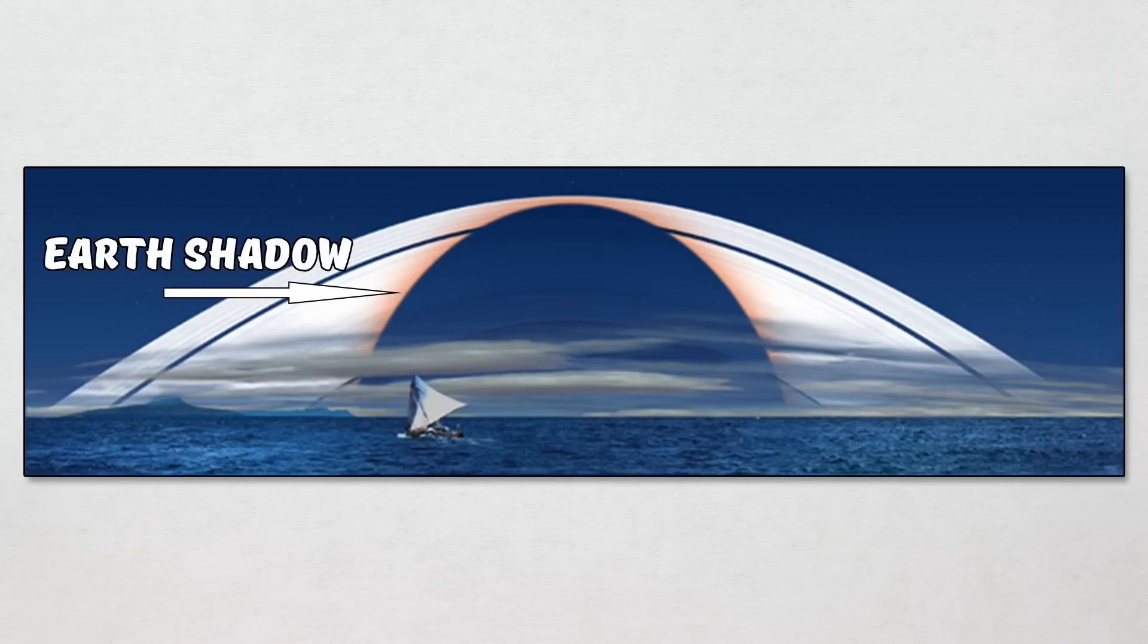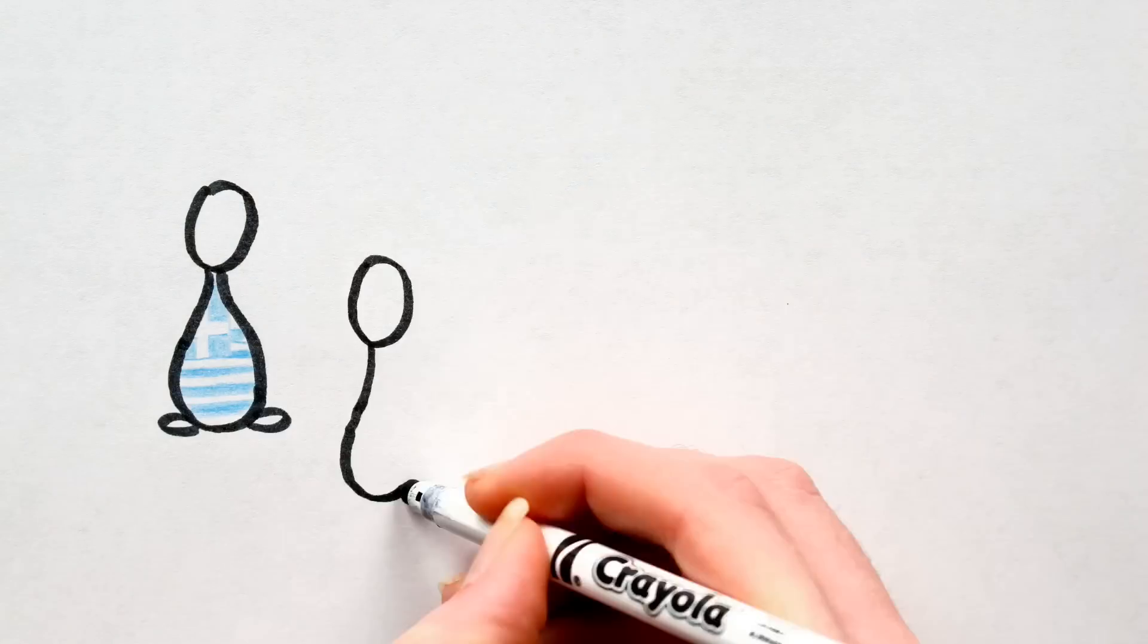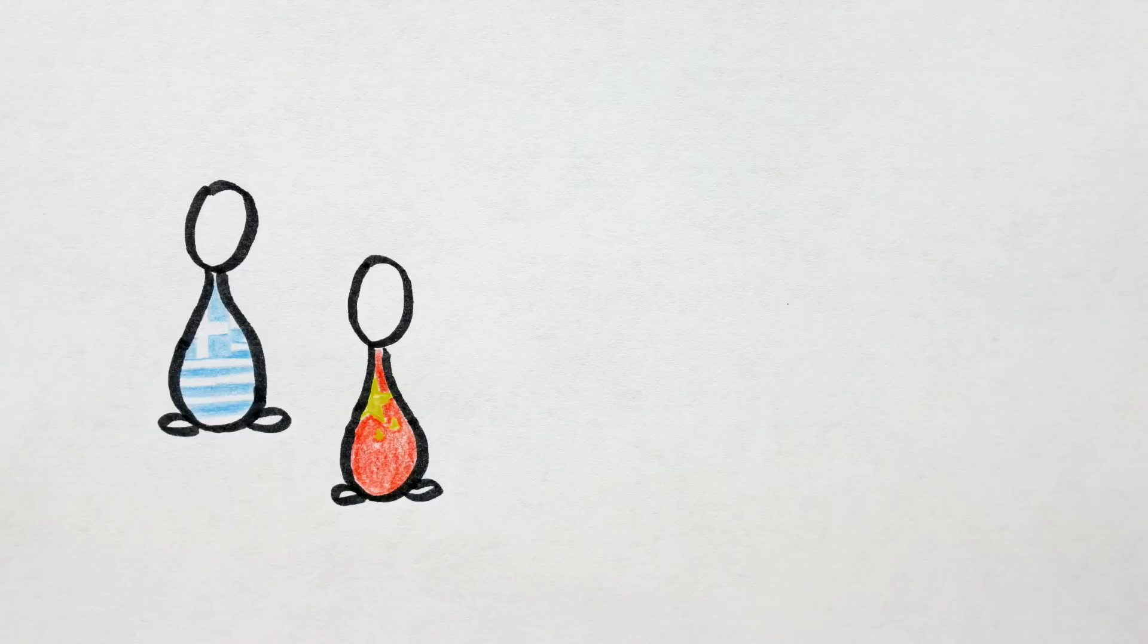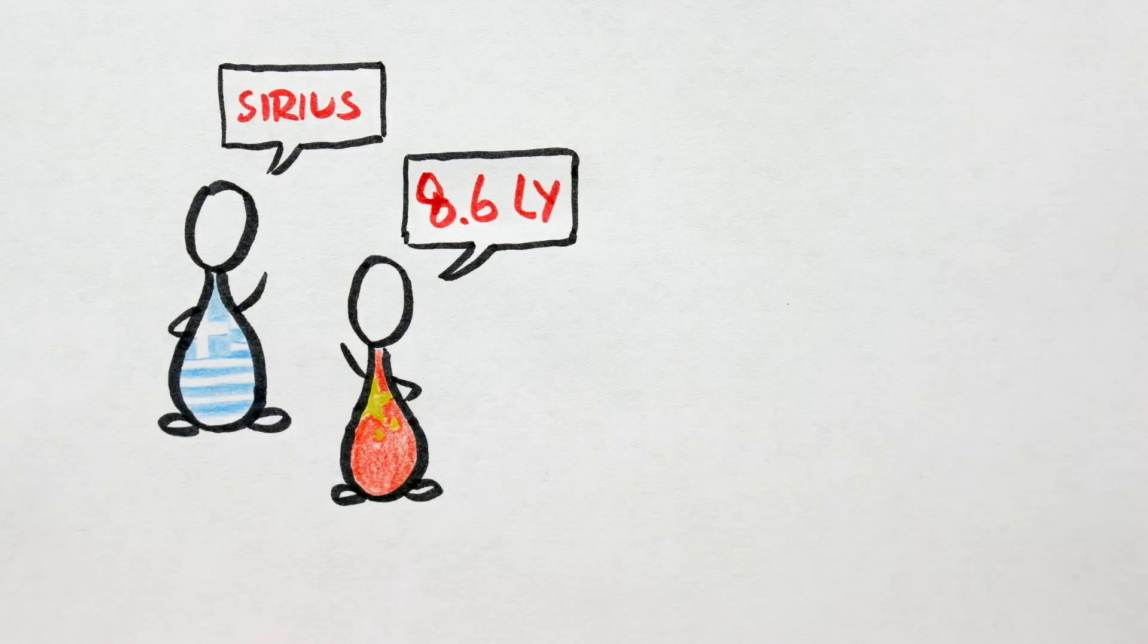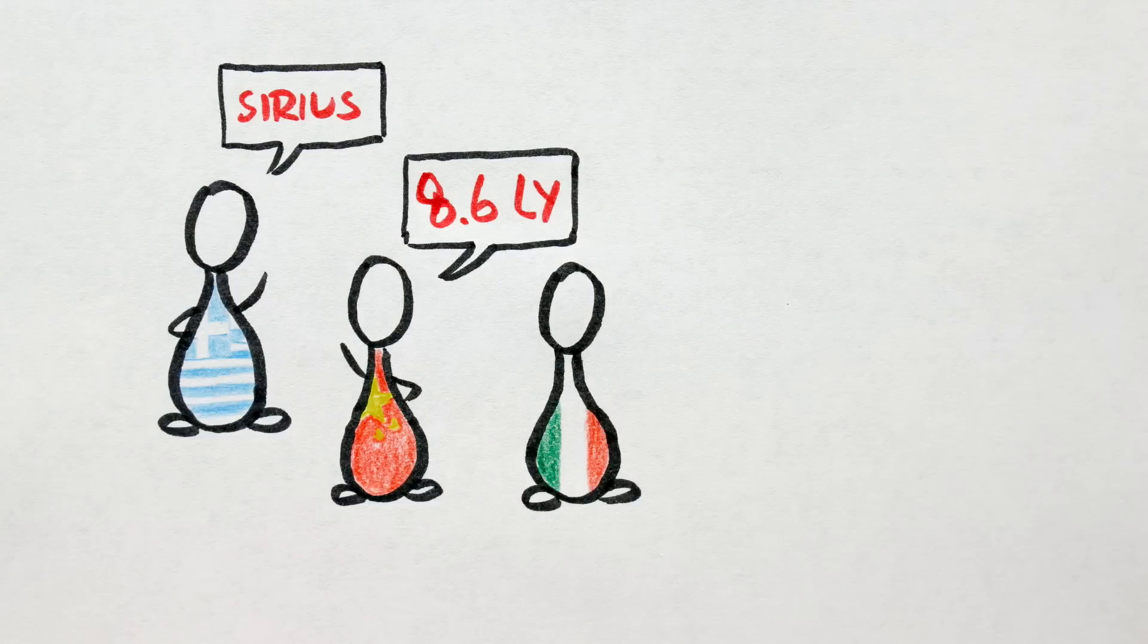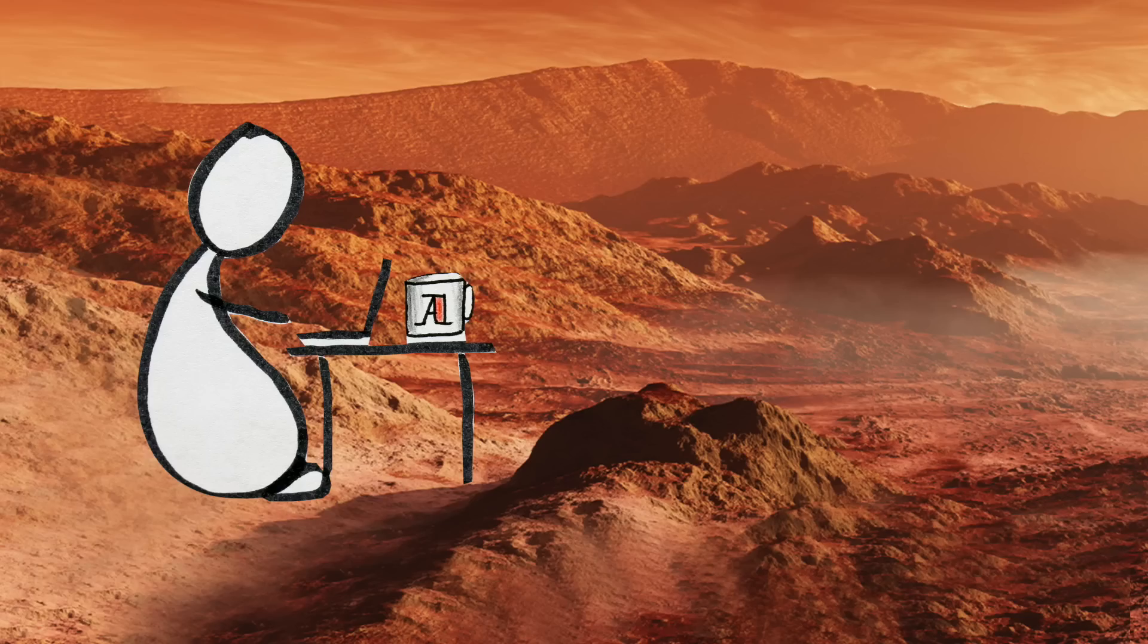The ancient Greeks or Chinese, using nothing but the sacks of fluid embedded in their faces, would have been able to tell you the rough distance to the stars. Just from looking up at the rings. Madness. Hell, the Romans, they might have been able to tell you what a parsec is. And I, I might have lived on Mars. Who knows?